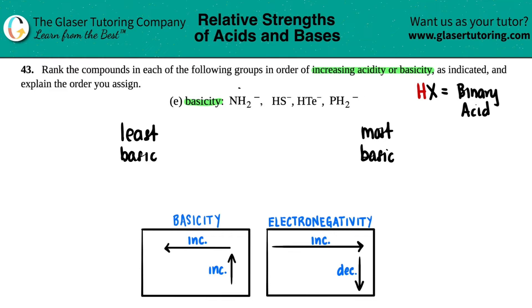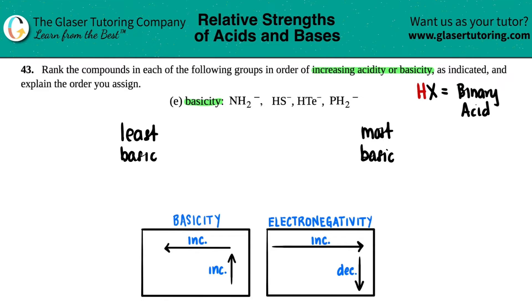So I just have nitrogen and hydrogen, hydrogen and sulfur, hydrogen and tellurium, and phosphorus and hydrogen.